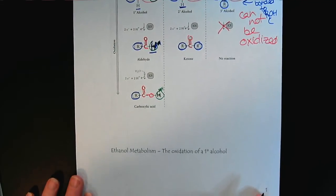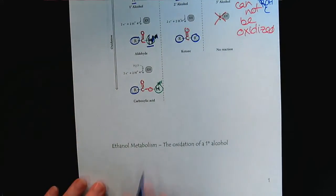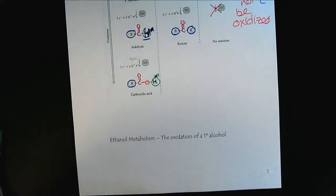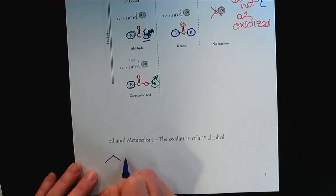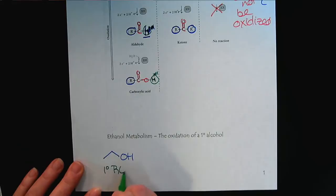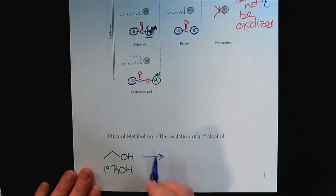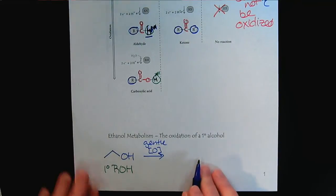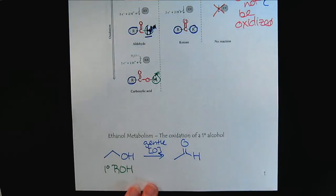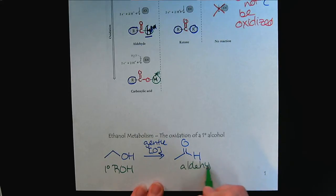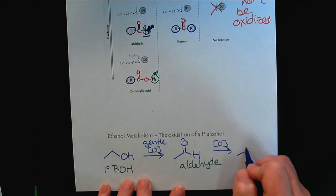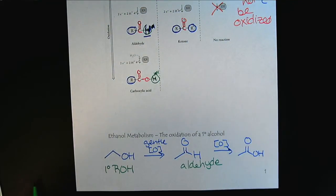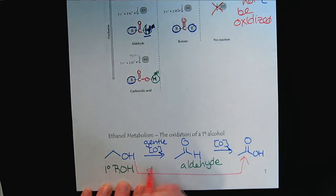A great reaction that covers most of these concepts would be the ethanol metabolism. We looked at it briefly in the other video, but now we'll look at it in terms of this series. If we start with ethanol, we have a primary alcohol. If this undergoes a gentle oxidation, then it will go to the aldehyde. And if we oxidize the aldehyde, it will go all the way to the carboxylic acid, or we could go directly from the alcohol to the carboxylic acid if we used a strong oxidizing agent.